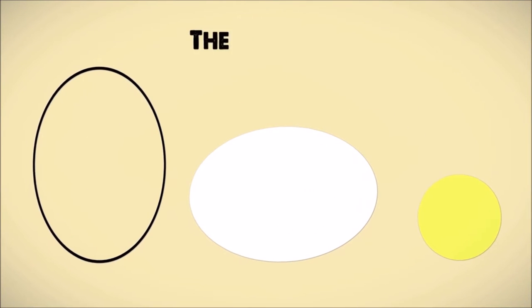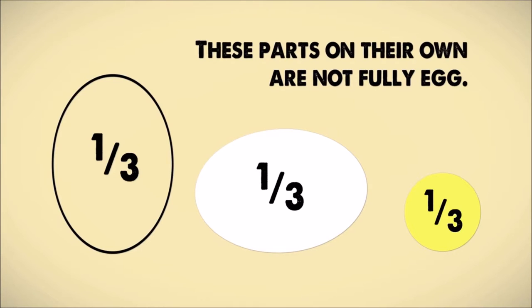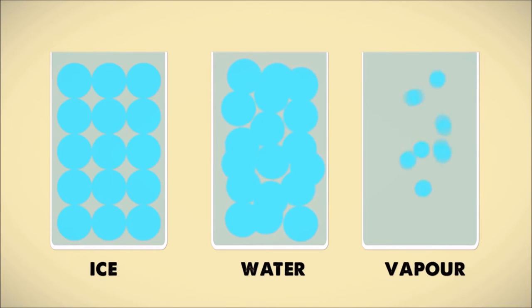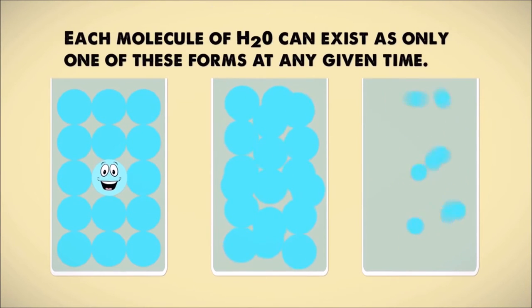The problem with these illustrations is that if applied to God, it suggests that there would be parts to God, and that each person in the Trinity wasn't fully God. Another common example uses water, ice, and vapor, since they are three forms of H2O, yet this too falls short since a molecule of H2O can exist as only one of these forms at any given time.